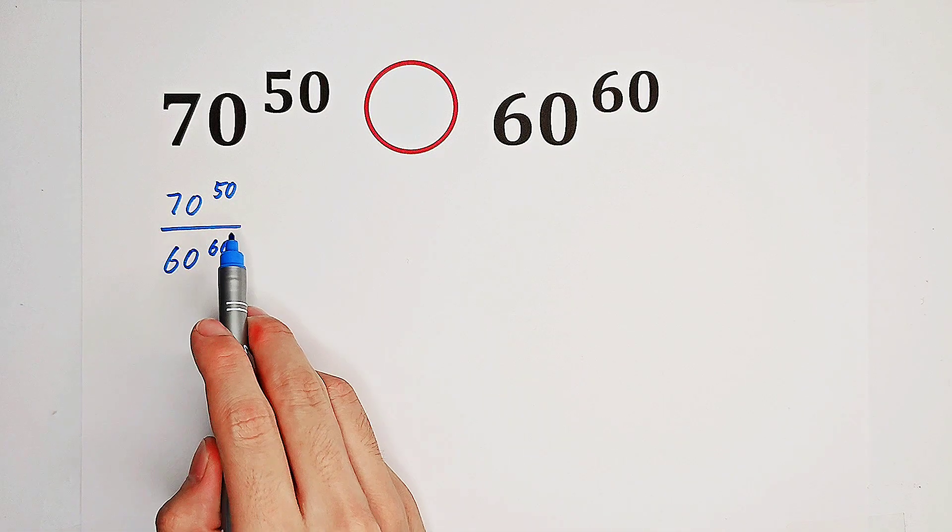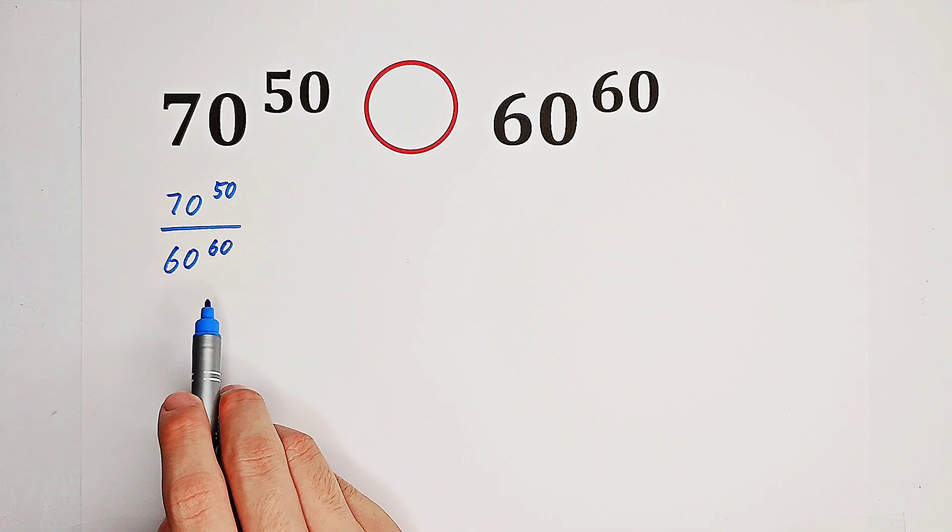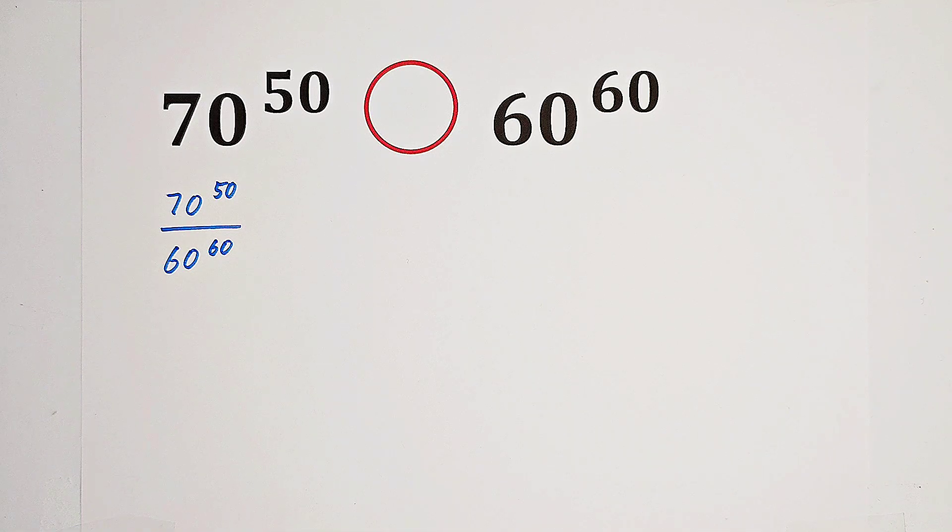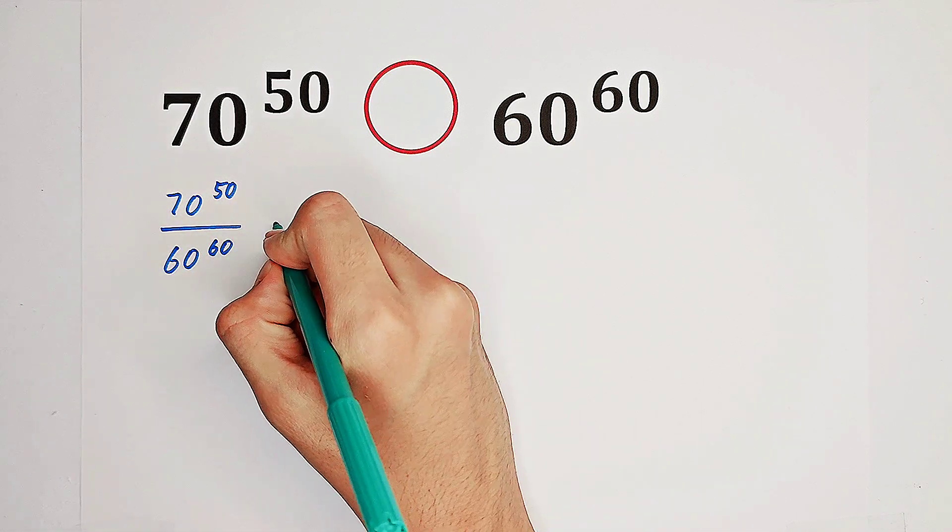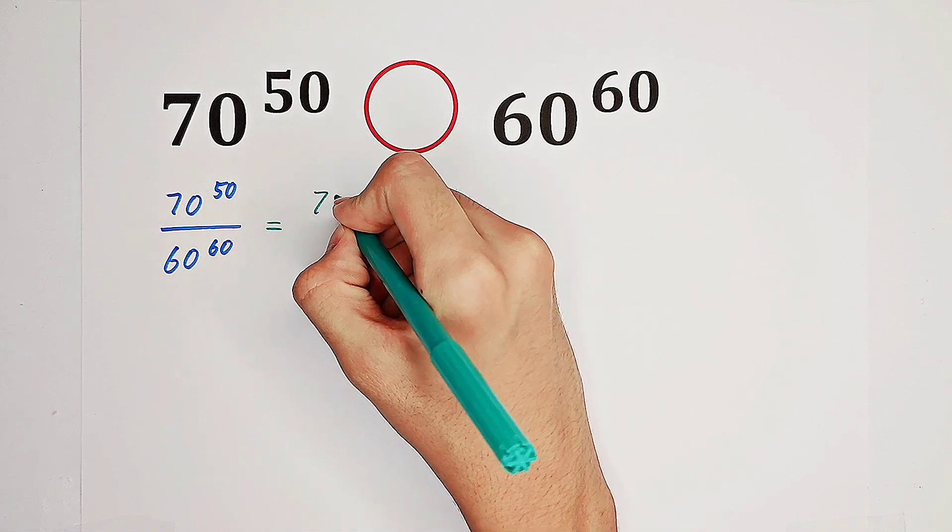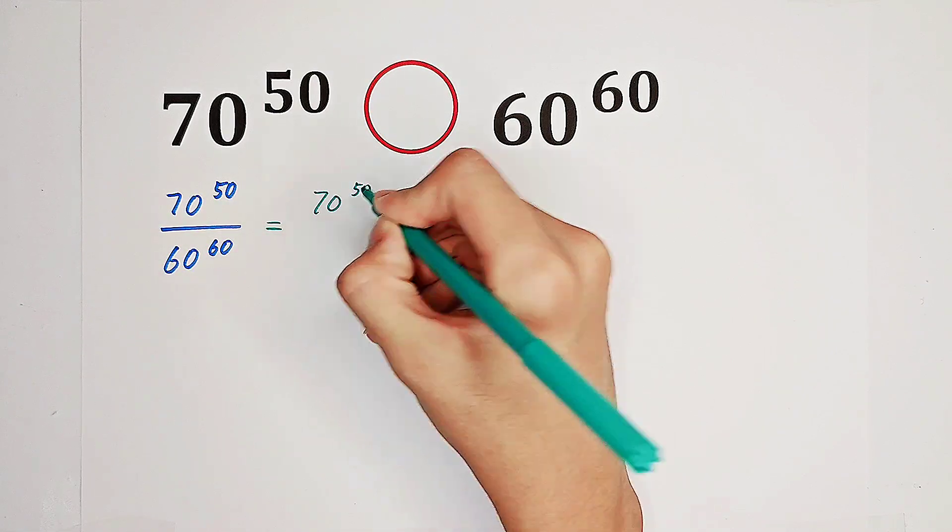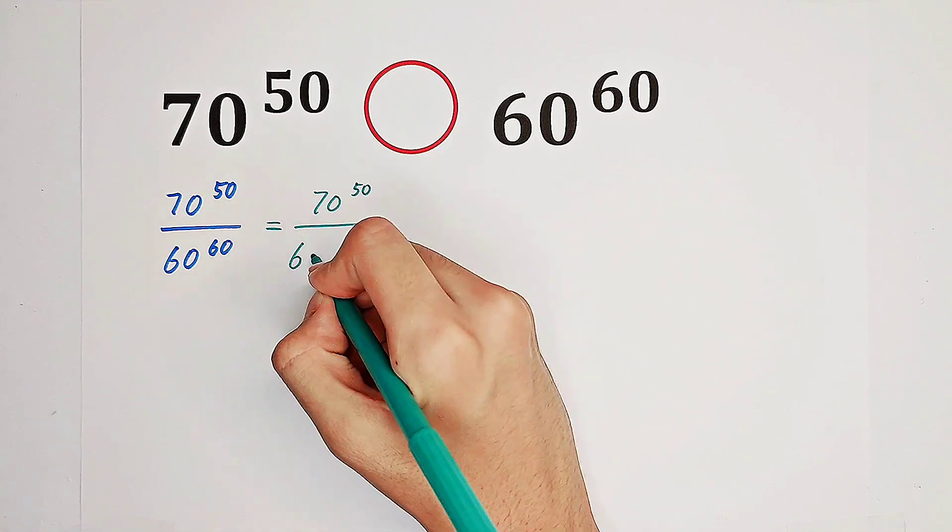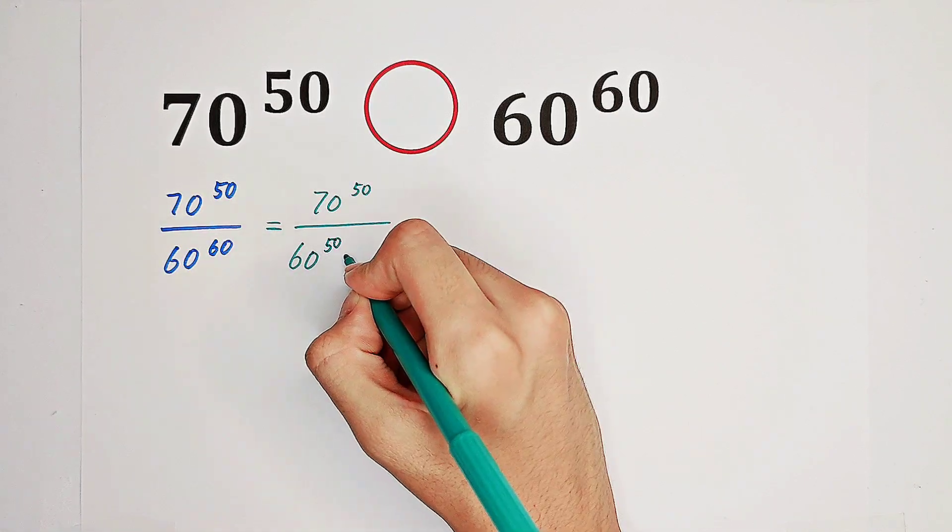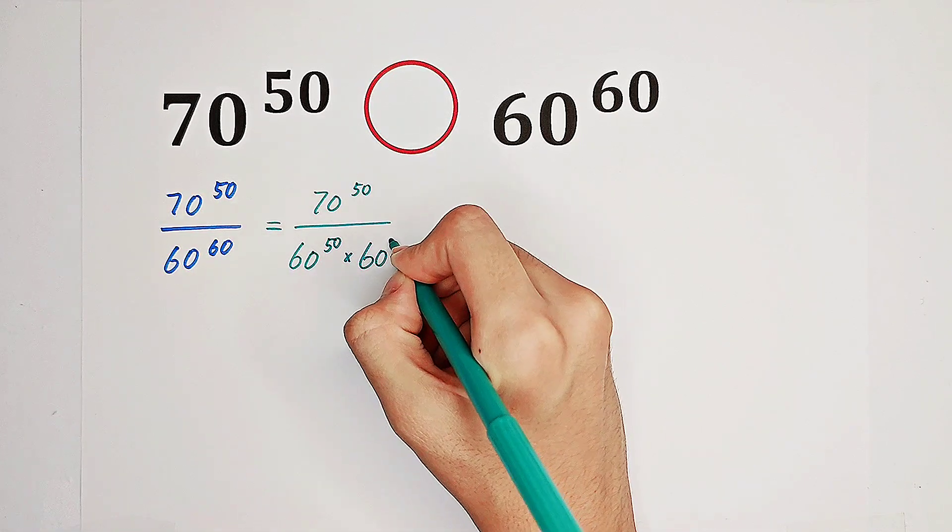So now, 70 to the power of 50 divided by 60 to the power of 60. Have a look at their exponents, 50 and 60. Now, what we can do is to write 60 to the power of 60 as 60 to the power of 50, then times 60 to the power of 10.